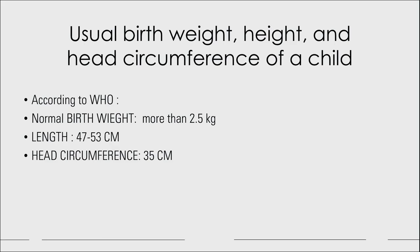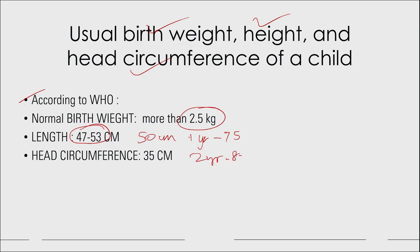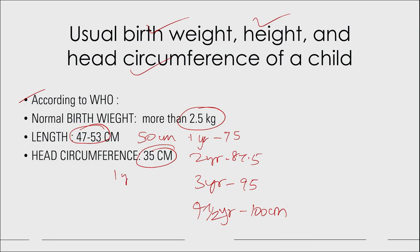For newborn anthropometric measurements: according to WHO, the normal birth weight should be more than 2.5 kg; below 2.5 kg is low birth weight. Average birth length is 47 to 53 cm (approximately 50 cm), reaching 75 cm at 1 year, 87.5 cm at 2 years, 95 cm at 3 years, and 100 cm at 4.5 years. Head circumference is 35 cm at birth, 45 cm at 1 year, 48 cm at 2 years, 49 cm at 3 years, reaching the adult size of 52 cm by around age 5.